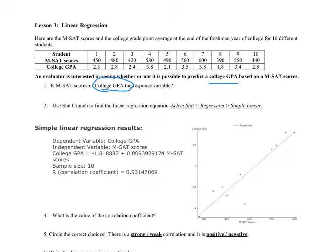Okay, so you want to begin by entering the data into the spreadsheet. In list one, put the math SAT scores. In the second list, put the college GPAs. I have screenshots in the notes that show you how to do this.